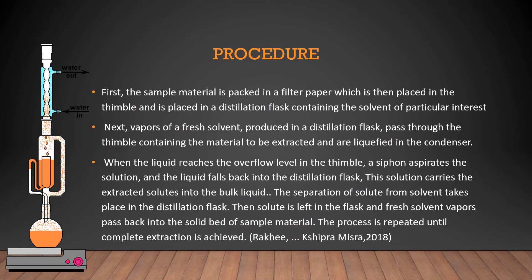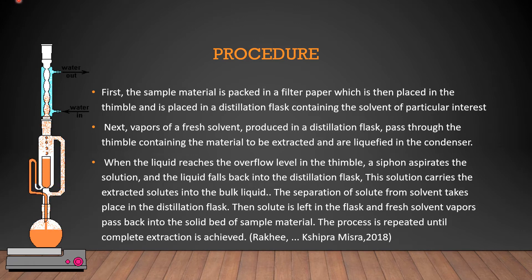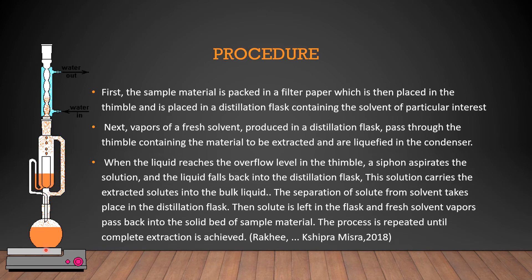So how does Soxlet extraction work? First, the sample is packed in a filter paper which is placed in the thimble and placed in a distillation flask containing the chosen solvent. Next, vapors of fresh solvent produced in the distillation flask pass through the thimble containing the material to be extracted and are liquefied in the condenser. When the liquid reaches the overflow level in the thimble, a siphon aspirates the solution and the liquid falls back into the distillation flask. This carries the extracted solutes into the bulk liquid. The separation of solute from solvent takes place in the distillation flask, where the solute is left behind and fresh solvent vapors pass back into the solid sample.